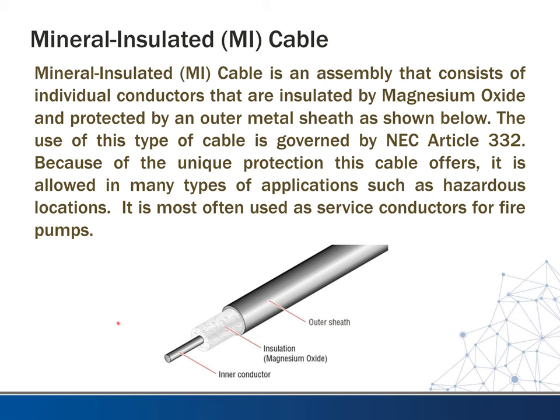Another type of cable is mineral insulated cable, or MI cable. This is an assembly that consists of individual conductors insulated by magnesium oxide and protected by an outer metal sheath. The use of this type of cable is governed by NEC Article 332. Because of its unique protection, MI cable is allowed in many types of applications such as hazardous locations and cable tray. Where you might see it most is on fire pumps — many jurisdictions will require MI cable to be run to the fire pump because it is so rugged, heavily protected, and fireproof.